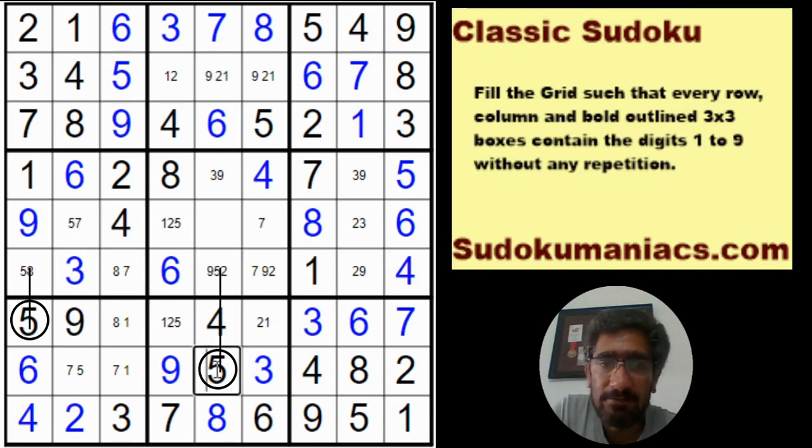But if we were still to go further, after putting the 5 in R8, C5, the 5 would come in R5, C4 by normal classic rules, which would then eliminate the 5 from R5, C2.